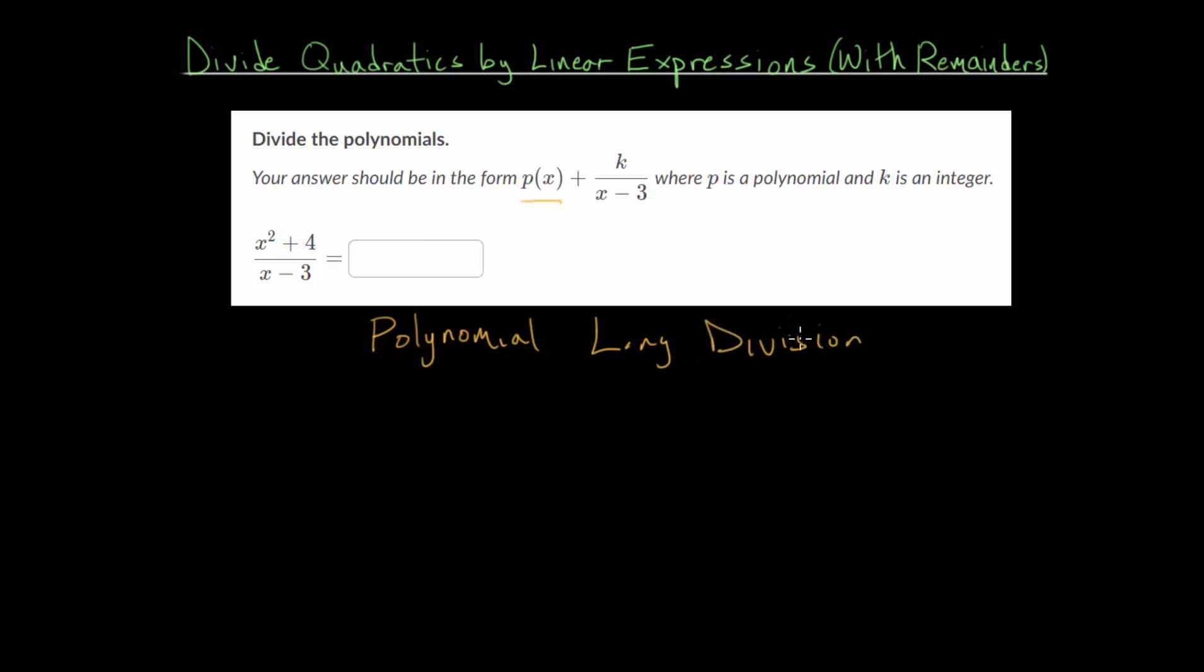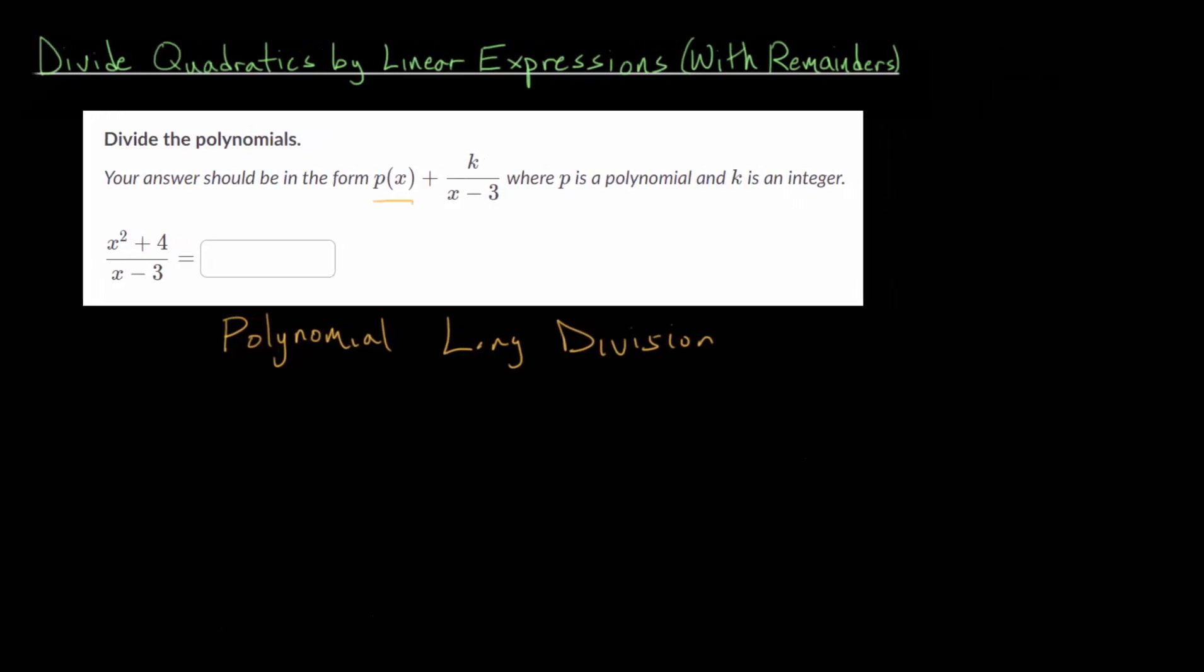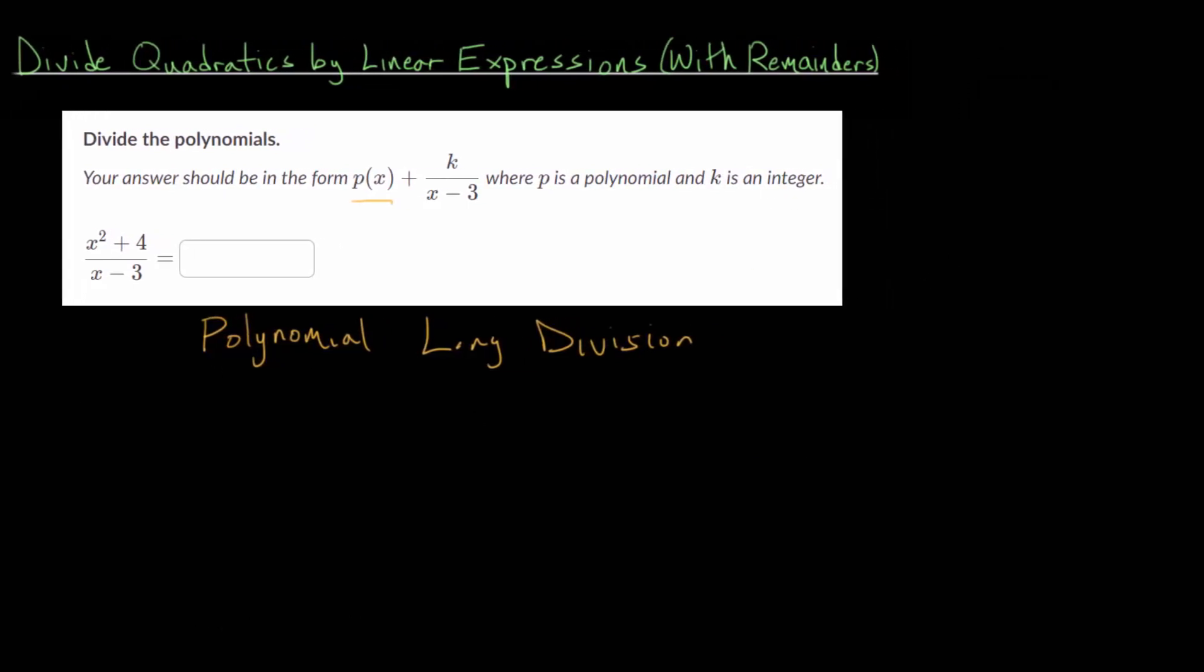Before we look at how polynomial long division works, let's remind ourselves how long division works with real numbers. Let's take 4 and divide it into 682. The long division algorithm follows a step-by-step procedure. We start by asking how many whole times does 4 go into 6? It goes in one whole time, so we put that above the 6.